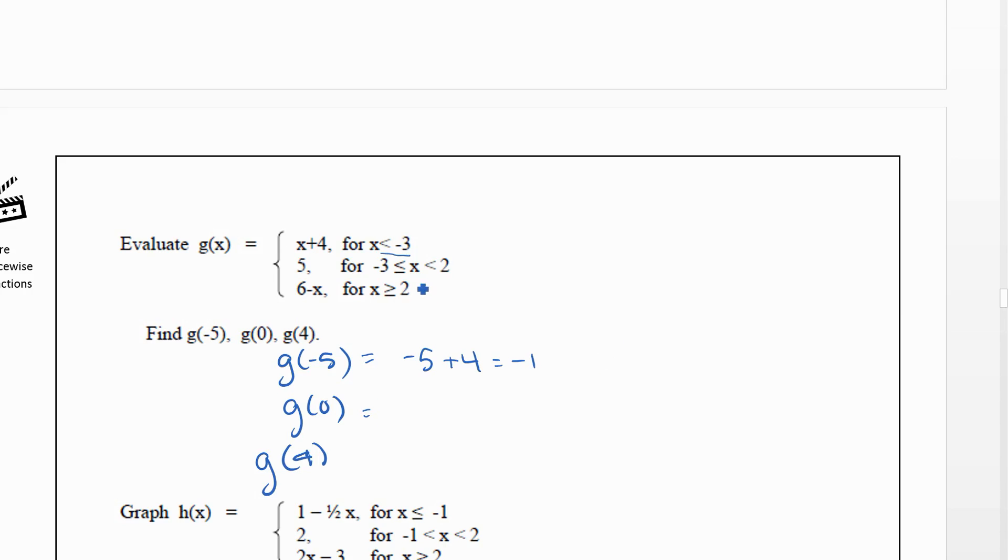g(0): well 0 is between -3 and 2, so we're going to plug it into this middle one. So we just get out 5. And 4: well 4 is bigger than or equal to 2, so we would do 6-4. g(4) would be equal to 2.